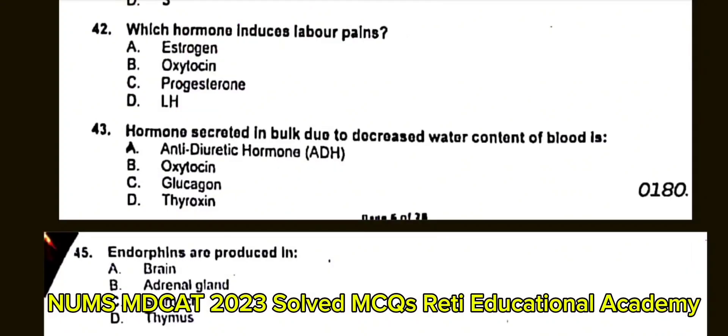Question number 42: Which hormone induces labor pains? A. Estrogen. B. Oxytocin. C. Progesterone. D. LH. The correct answer is B: Oxytocin.